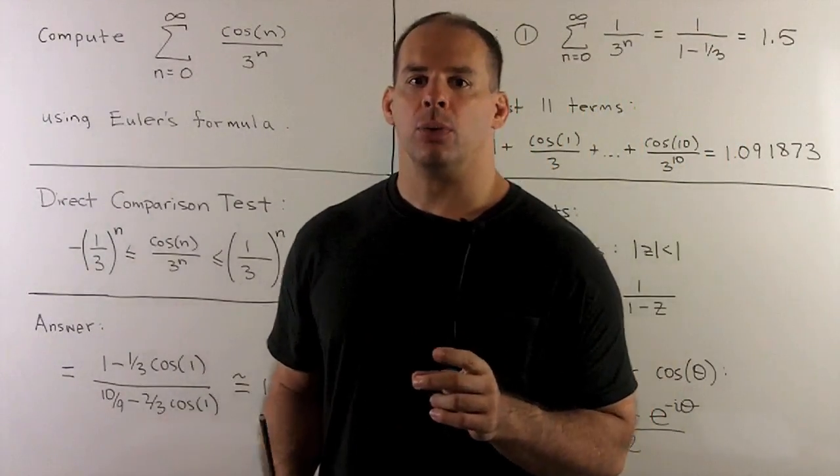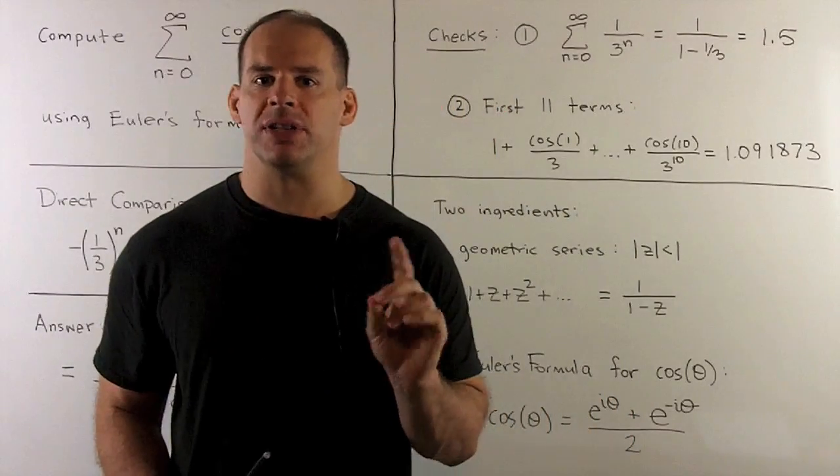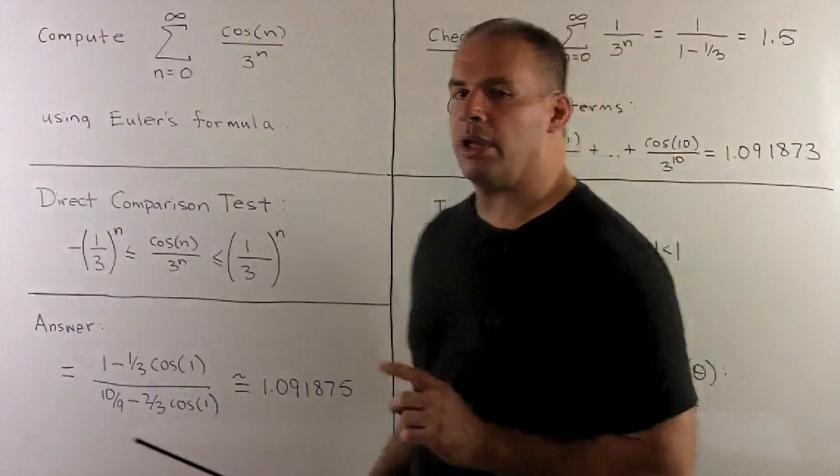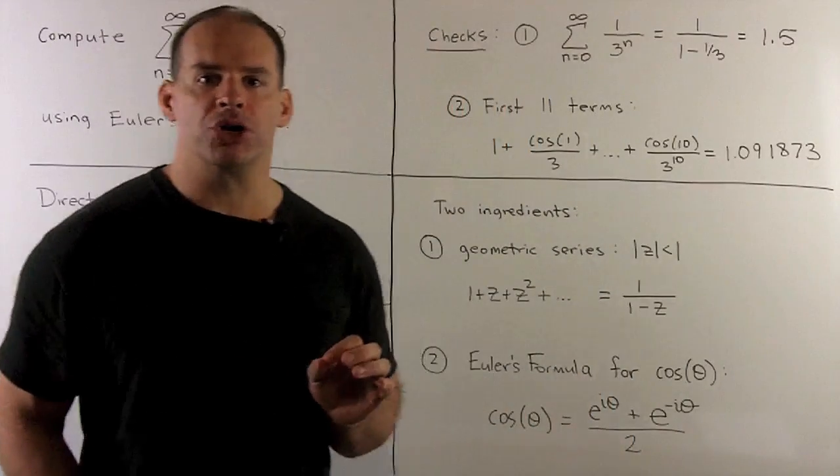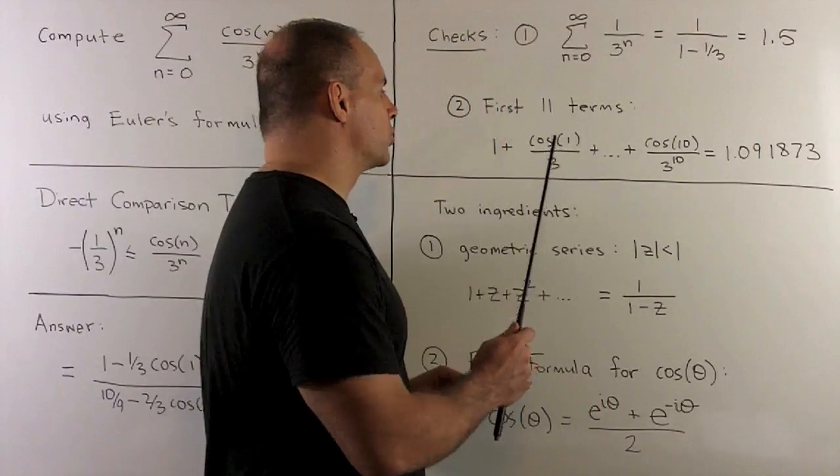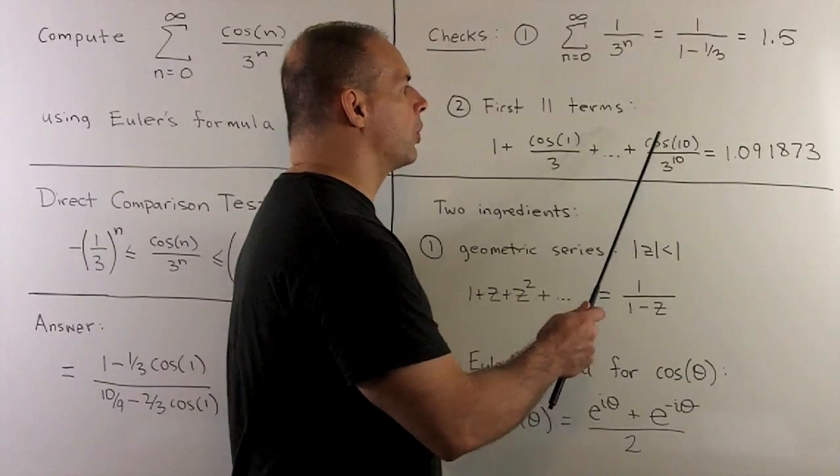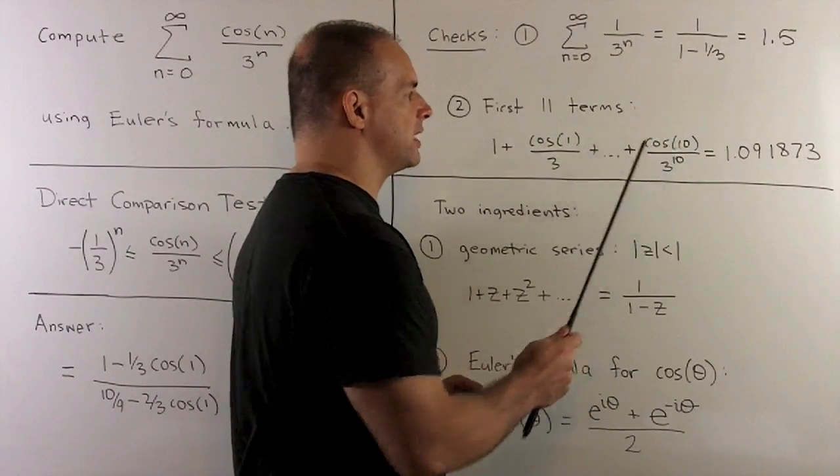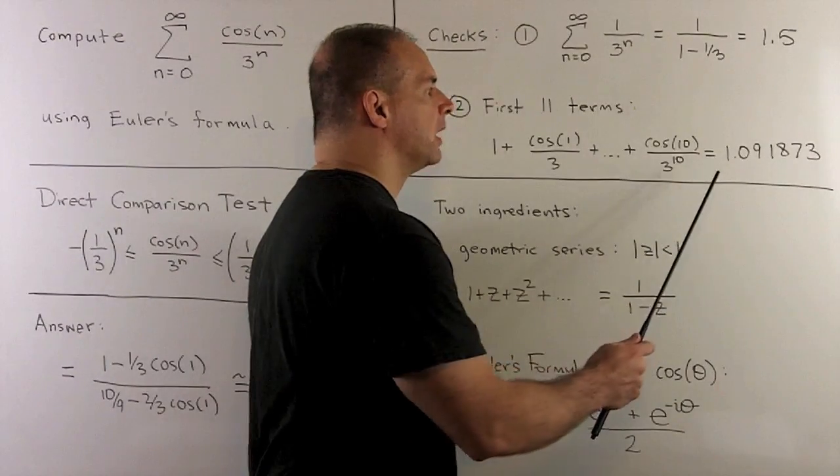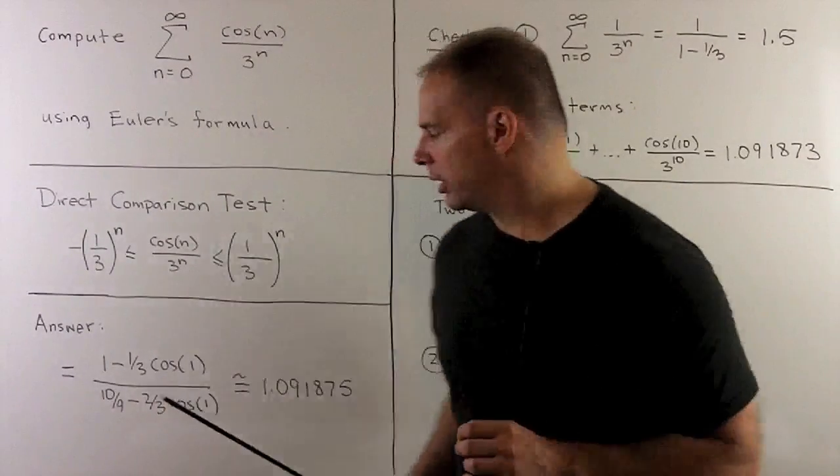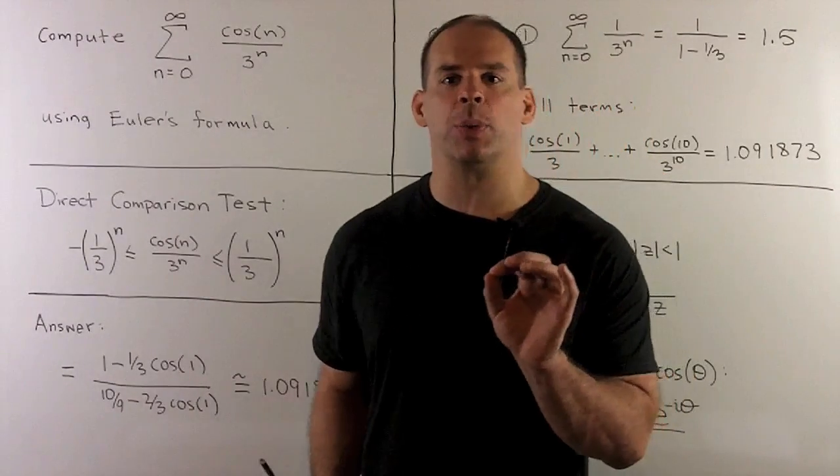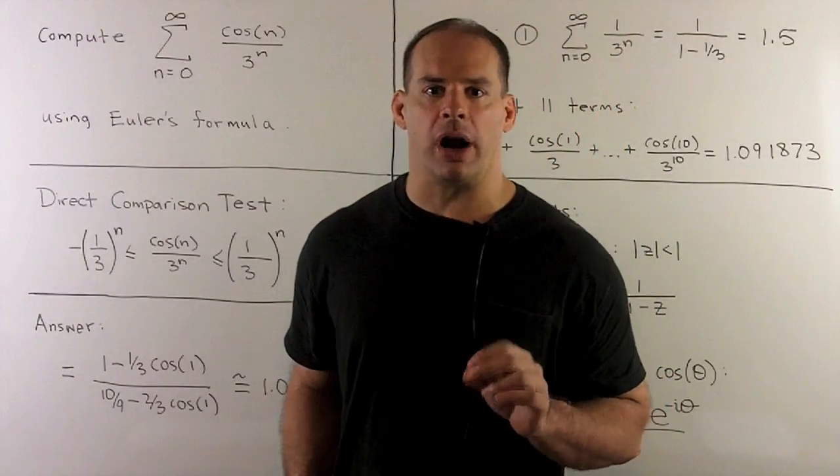Next check, we'll just take a partial sum and see if we land anywhere near our result. So let's take the 11th partial sum, we'll take the first 11 terms. So 1 plus cosine 1 over 3, all the way up through cosine of 10 over 3 to the 10. So you work that out, you get 1.091873. And we see that we're very close to our answer here. So at least at this point, we should be willing to believe our answer.